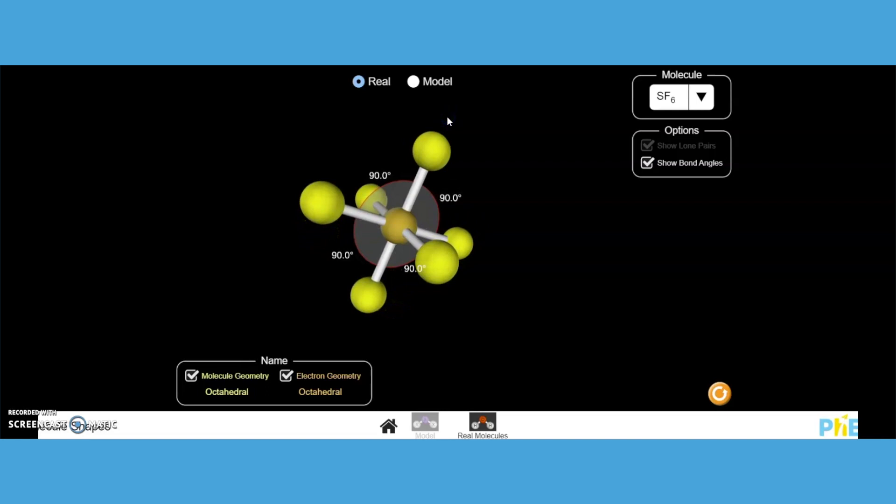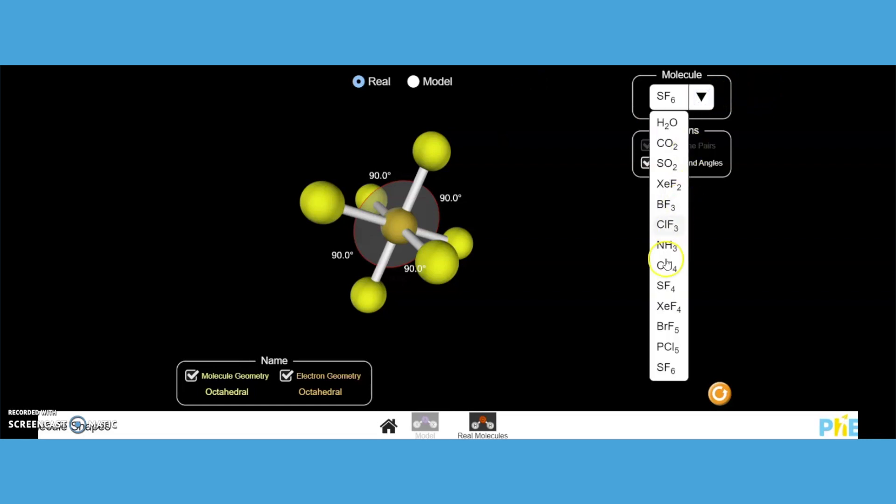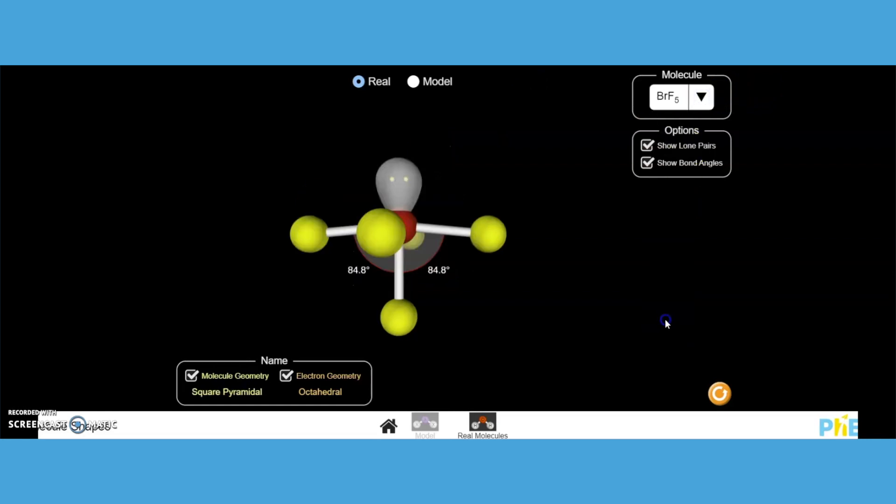Over time, students are going to develop the principle that the molecular geometry and the electron geometry will always be the same when there are no unshared pairs found on the central atom. That's a main theme that most students get and develop in terms of going through these structures and being able to visualize.